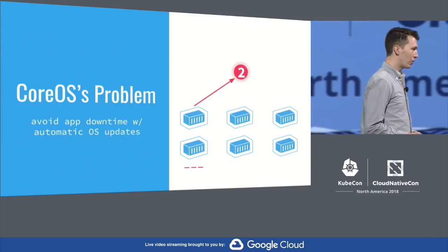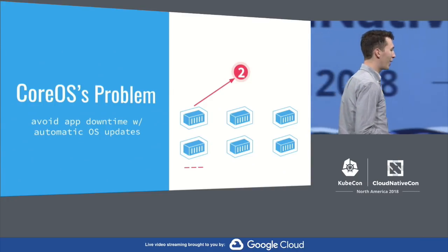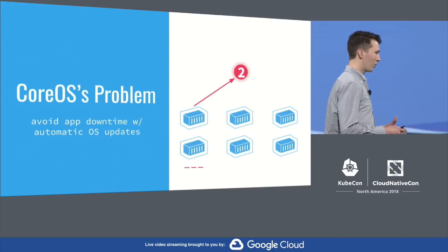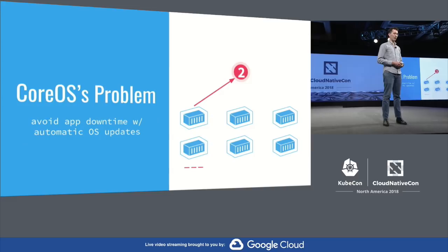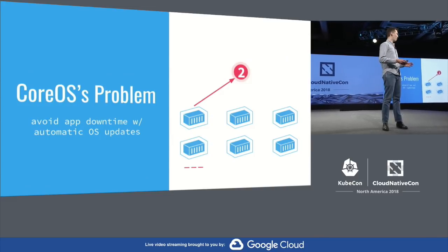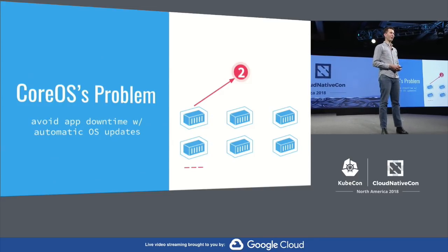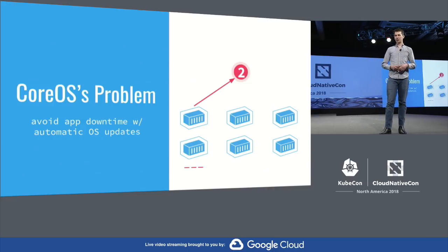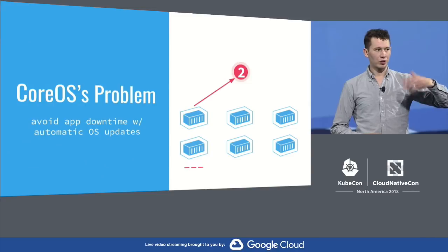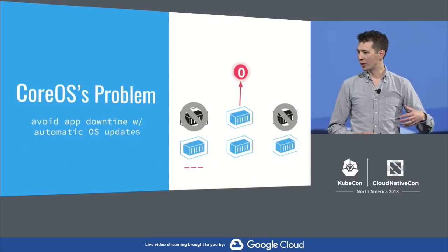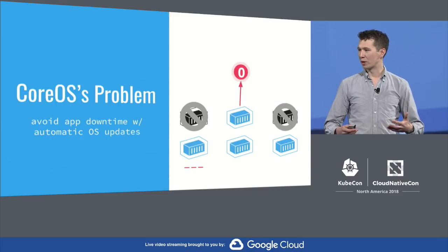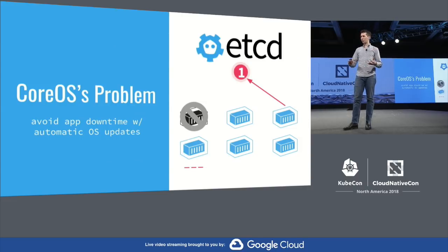Now we built etcd five years ago to solve this particular problem that we had at CoreOS, which is we were seeing this view of servers as something that would automatically update themselves. And obviously, you don't want to automatically update all your servers at once — that would cause downtime. And so we needed something that could hold on to an atomic mutex and make sure not too many machines were rebooting at once. Every time a machine wanted to reboot, it asked for permission, and then something would stop you from rebooting too many machines. And that's what we built etcd for.